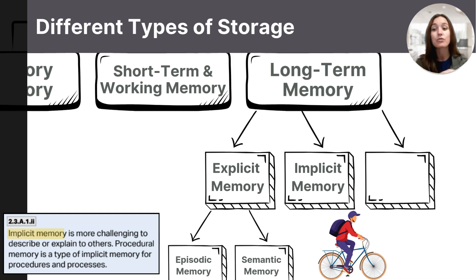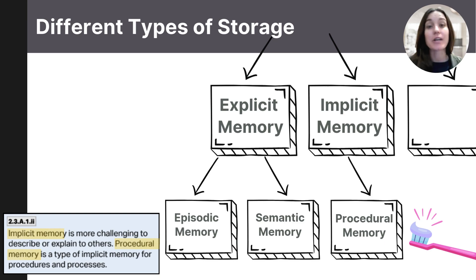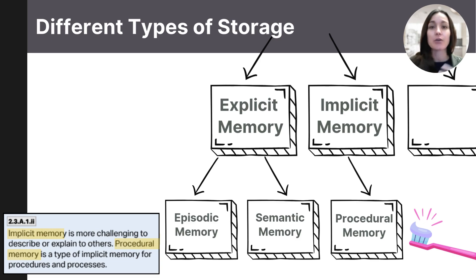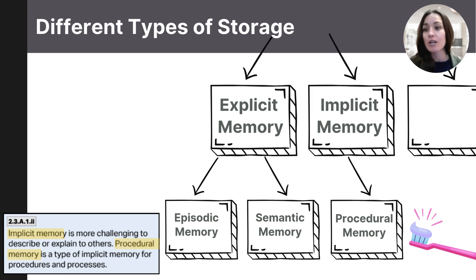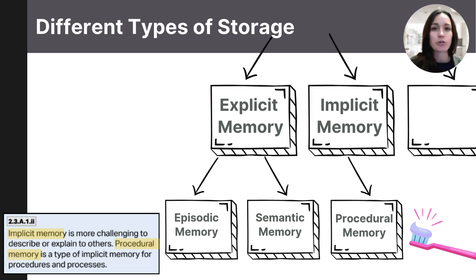Implicit memory includes a broad range of things like learned skills, habits, and conditioned responses that occur outside of our conscious awareness, and implicit memories are stored in your cerebellum and basal ganglia. A procedural memory is a specific type of implicit memory that focuses on motor skills, actions, and how to do things — a memory of how to perform tasks that require motor coordination or physical movements. Think about brushing your teeth: knowing all of those steps is a procedural memory. Things like tying your shoes, playing a musical instrument, or driving a car — skills ingrained in memory to perform automatically.